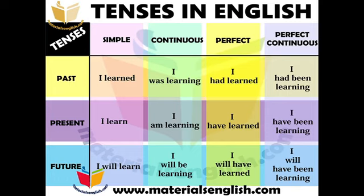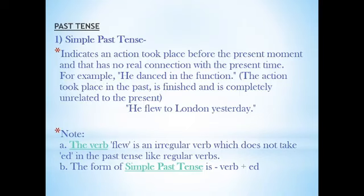For the future tense: simple future is 'I will learn.' Future continuous is 'I will be learning.' Future perfect is 'I will have learned.' Future perfect continuous is 'I will have been learning.' A key point: whenever a tense is continuous, the '-ing' form is a compulsory and mandatory part of it. Let us now go into the detail of each tense.